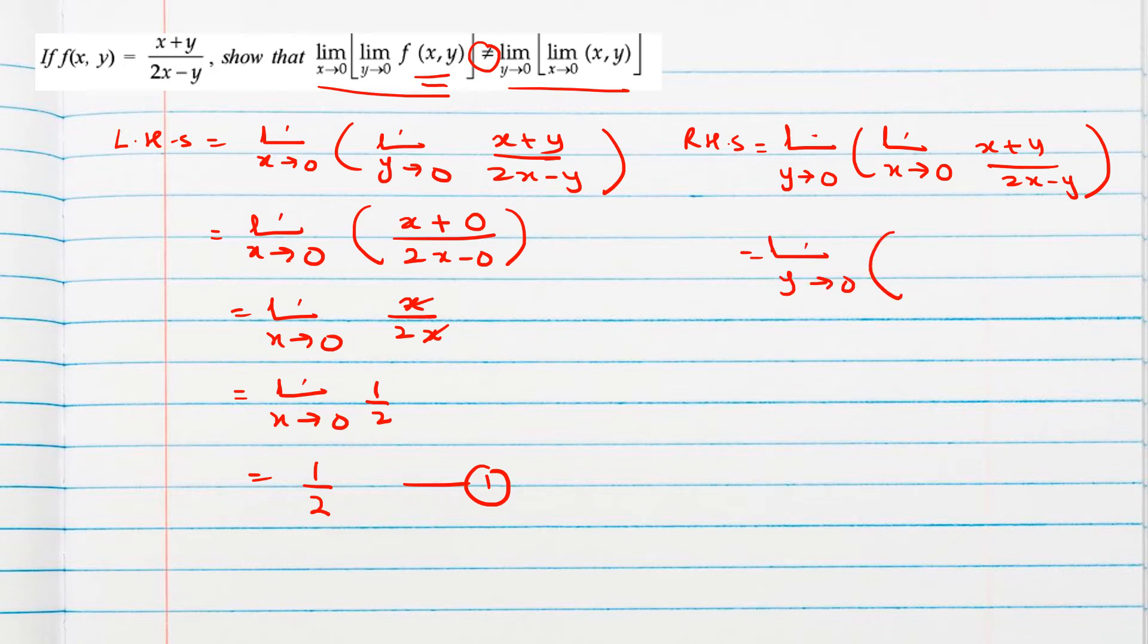Now we are finding the limit as x tends to 0. So y will be treated as constant and we substitute x=0. This gives (0+y)/(0-y) = y/(-y) = -1, which is again a constant function. So the answer is -1.